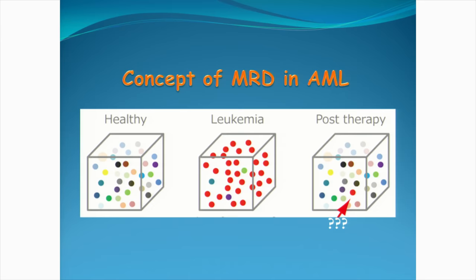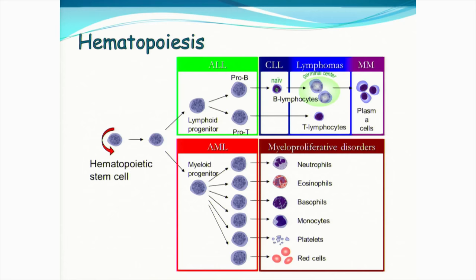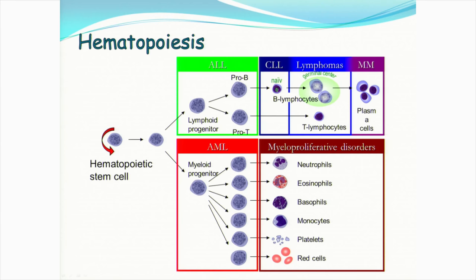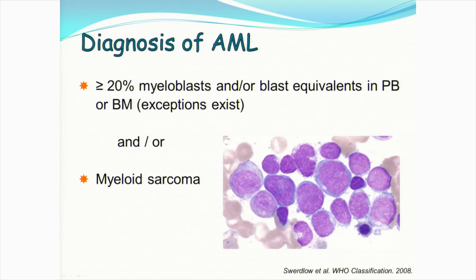Normal hematopoiesis starts with a hematopoietic stem cell, which gives rise to a lymphoid progenitor and a myeloid progenitor. A lymphoid progenitor further differentiates into T cells and B cells, and a myeloid progenitor differentiates into mature neutrophils and other mature forms of white blood cells. AML is caused by clonal proliferation of progenitor cells with reduced capacity to differentiate into more mature forms. Current WHO defines AML as more than 20% myeloid blasts or blast equivalents in peripheral blood or bone marrow, or myeloid sarcoma formation.